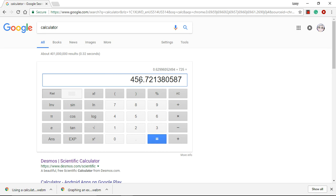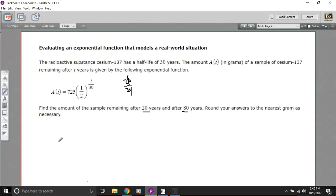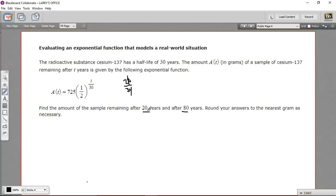So we get 456. Well, if we round that to the nearest gram, we get 457. So let's write that down. So after 20 years, we have 457 grams left. And that makes sense, because if the half-life is 30 years, we haven't reached quite 30 years. We should have a little bit more than half left, and we do.